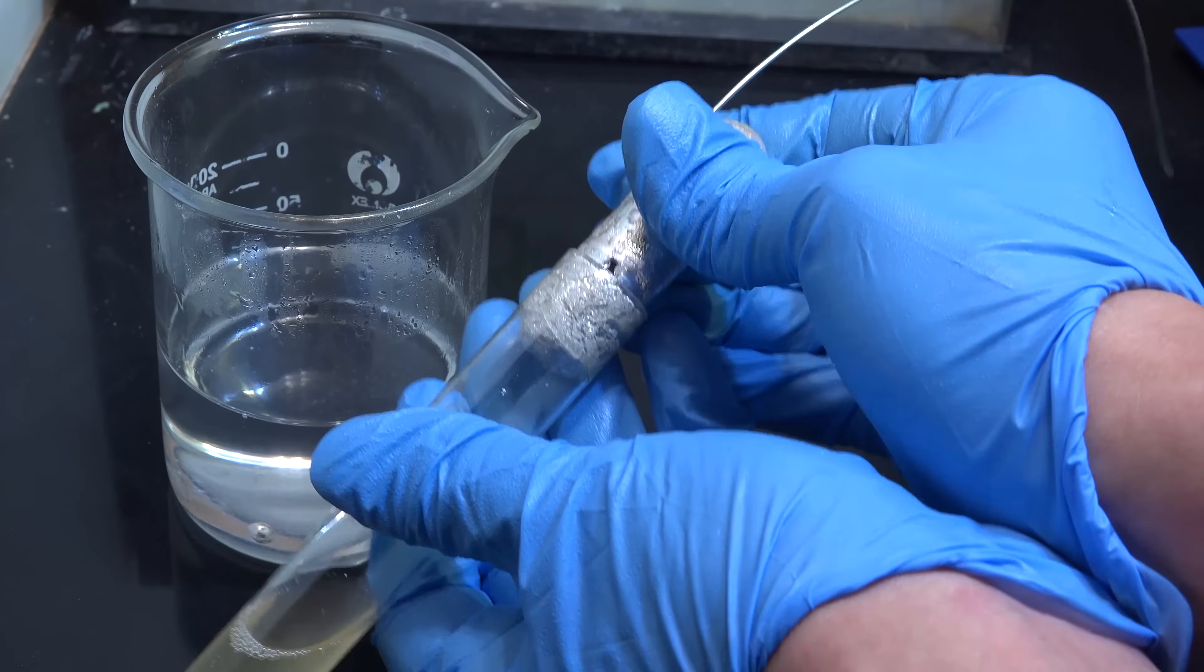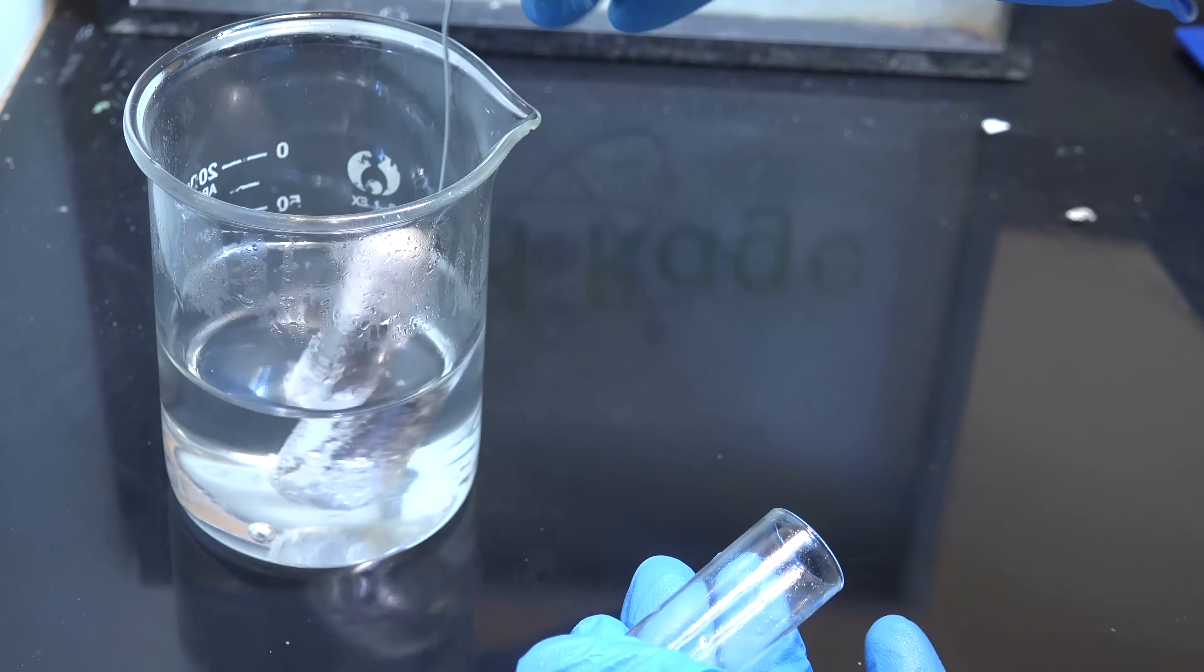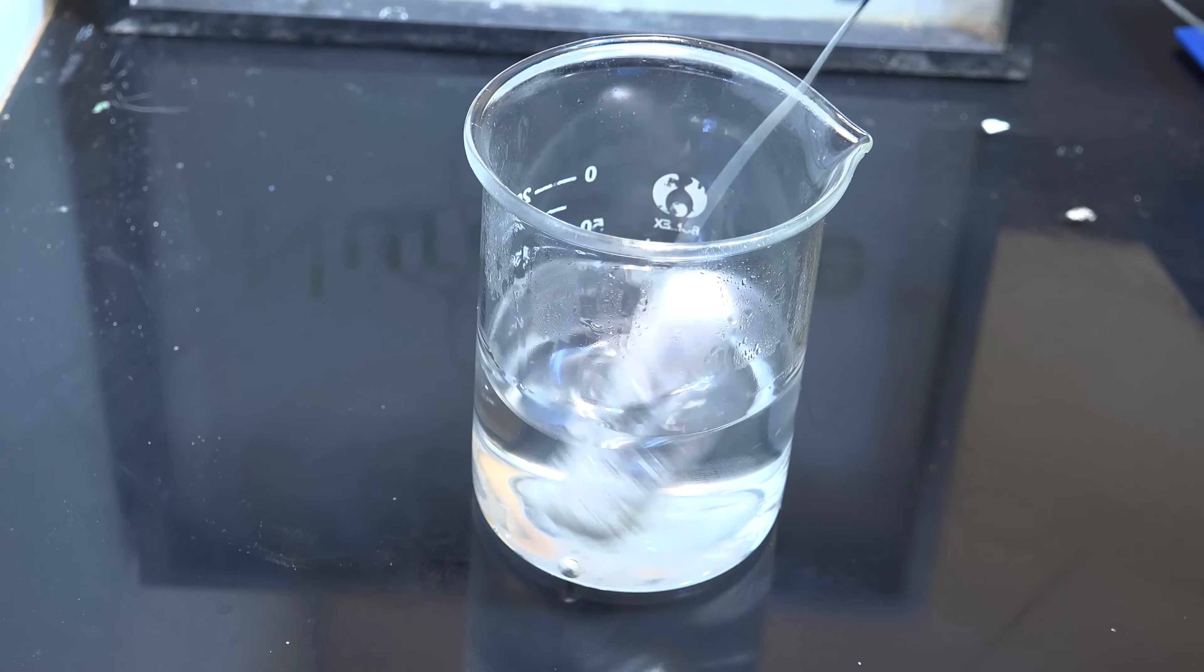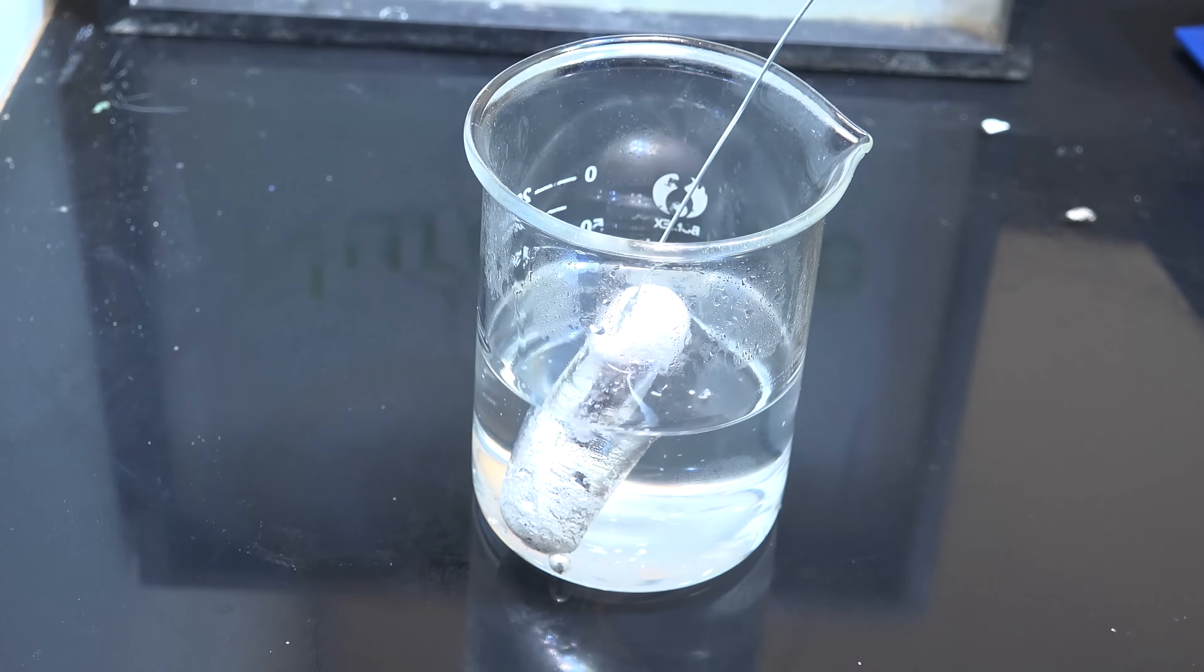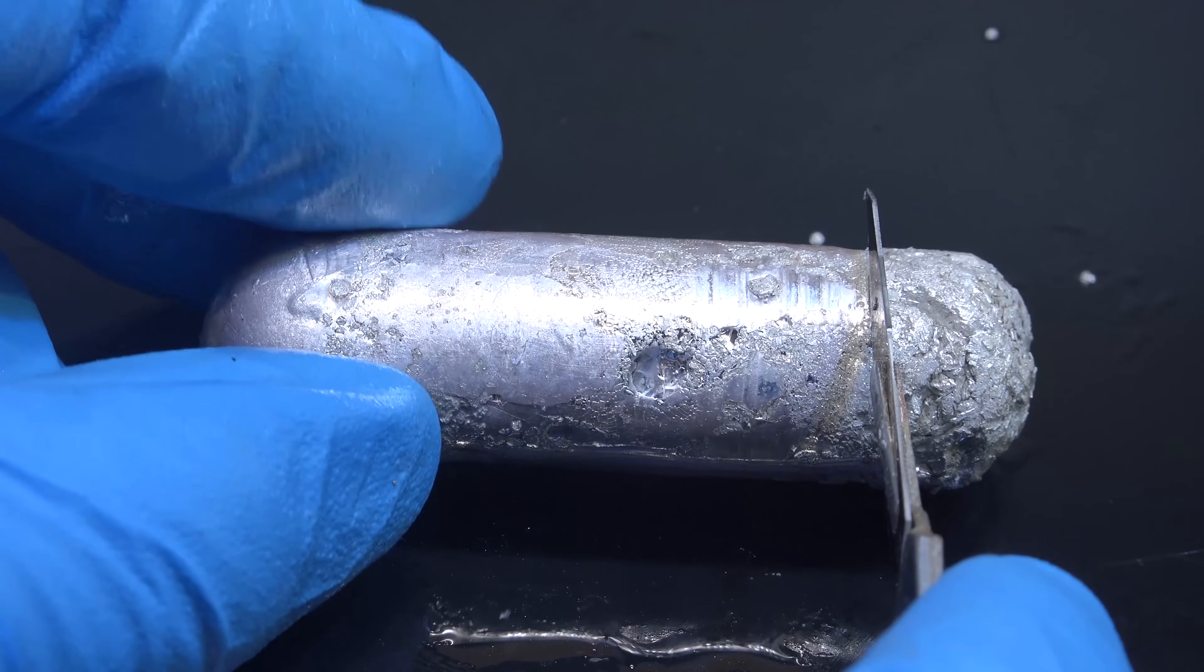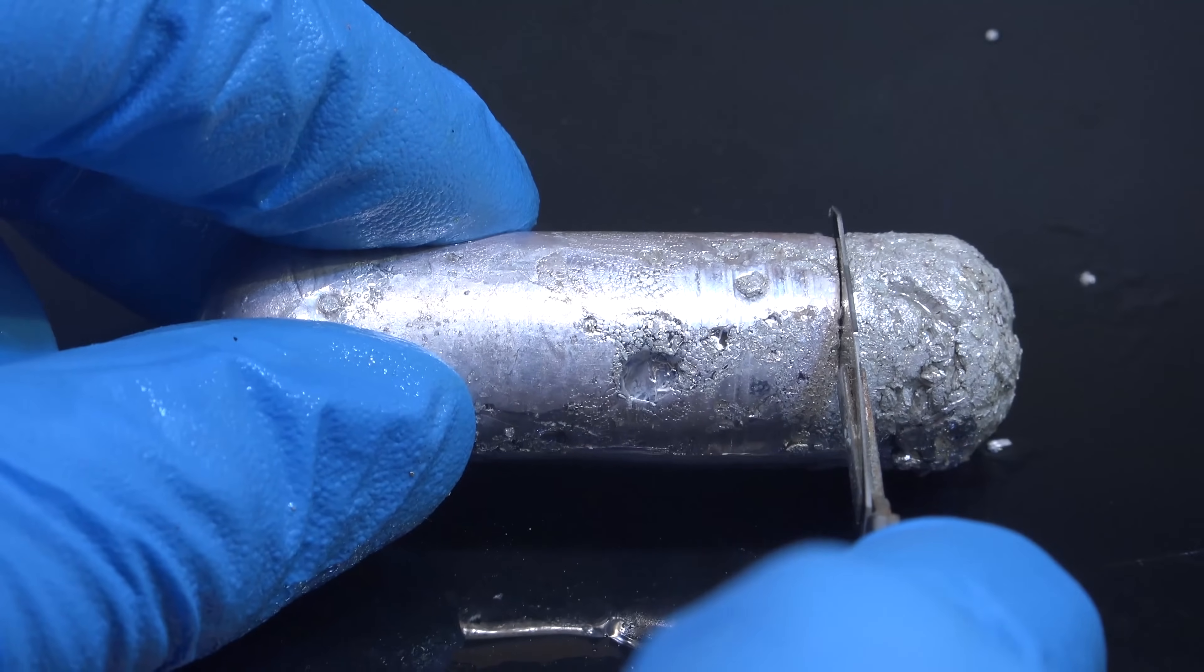There we go. I recommend rinsing the sodium in oil to minimize air exposure. And here we are, one solid plug of sodium. Pull out the wire since we don't need it anymore. Now using a sharp knife, cut off about a fifth to a quarter of the bottom end of the sodium plug.